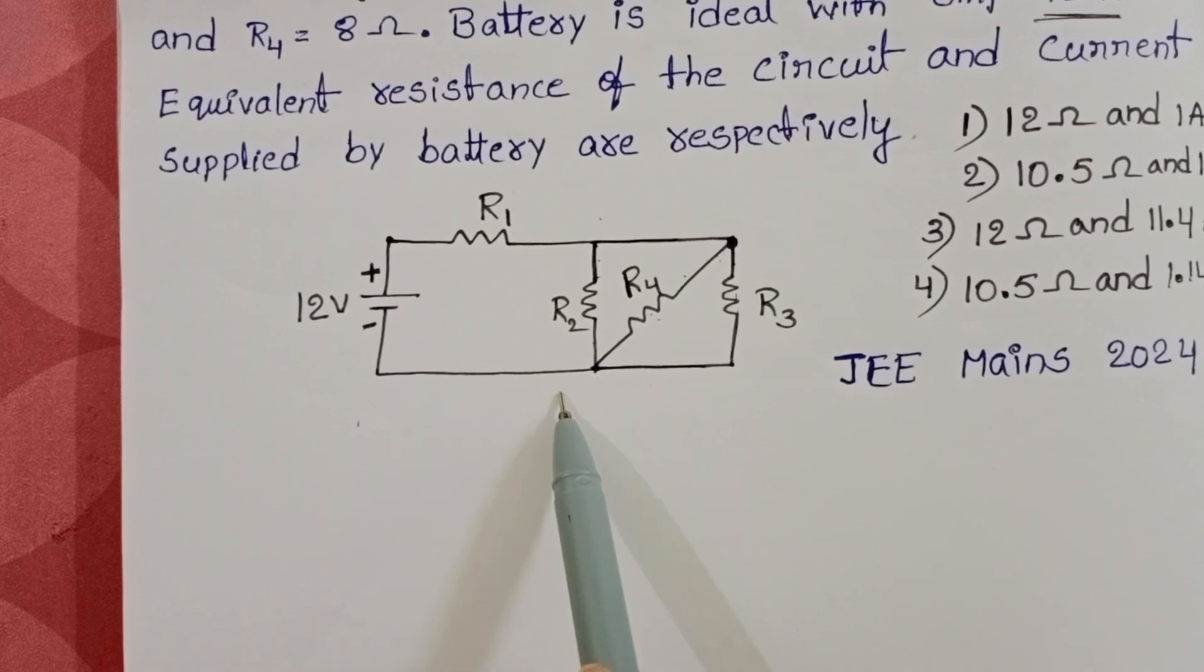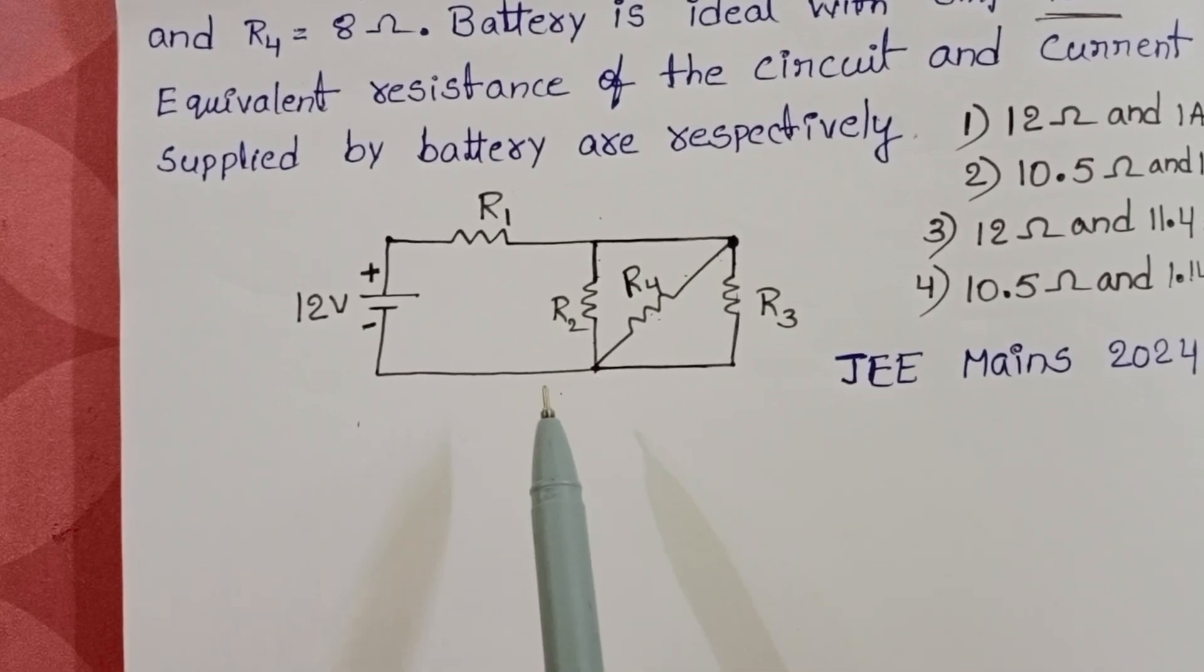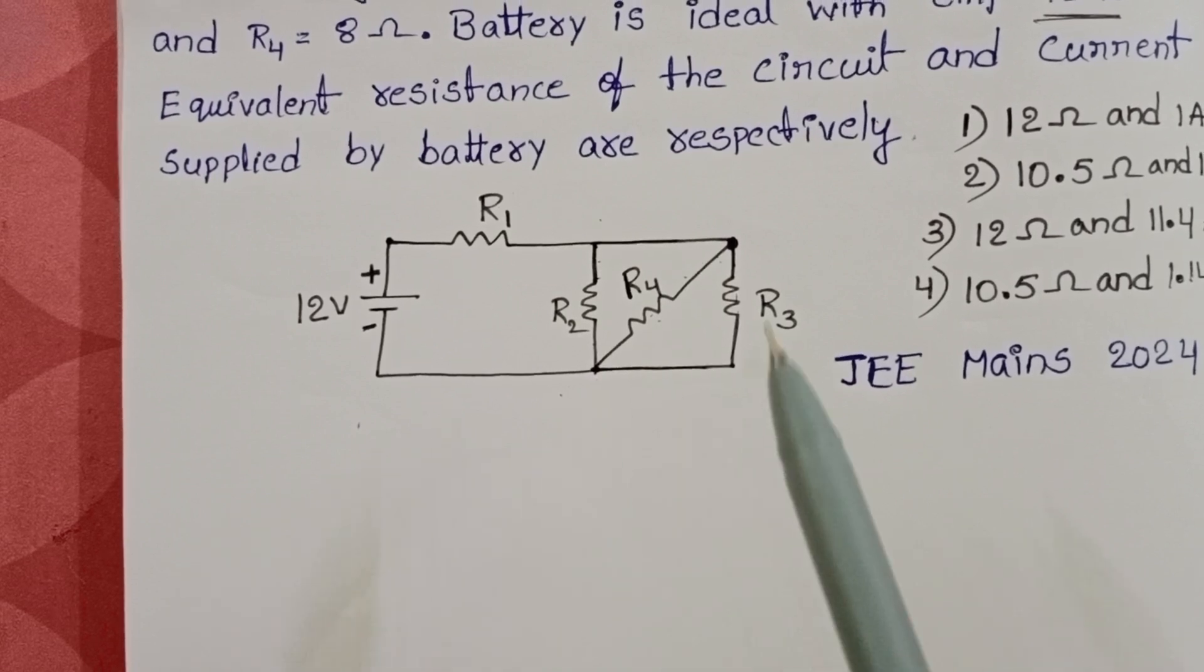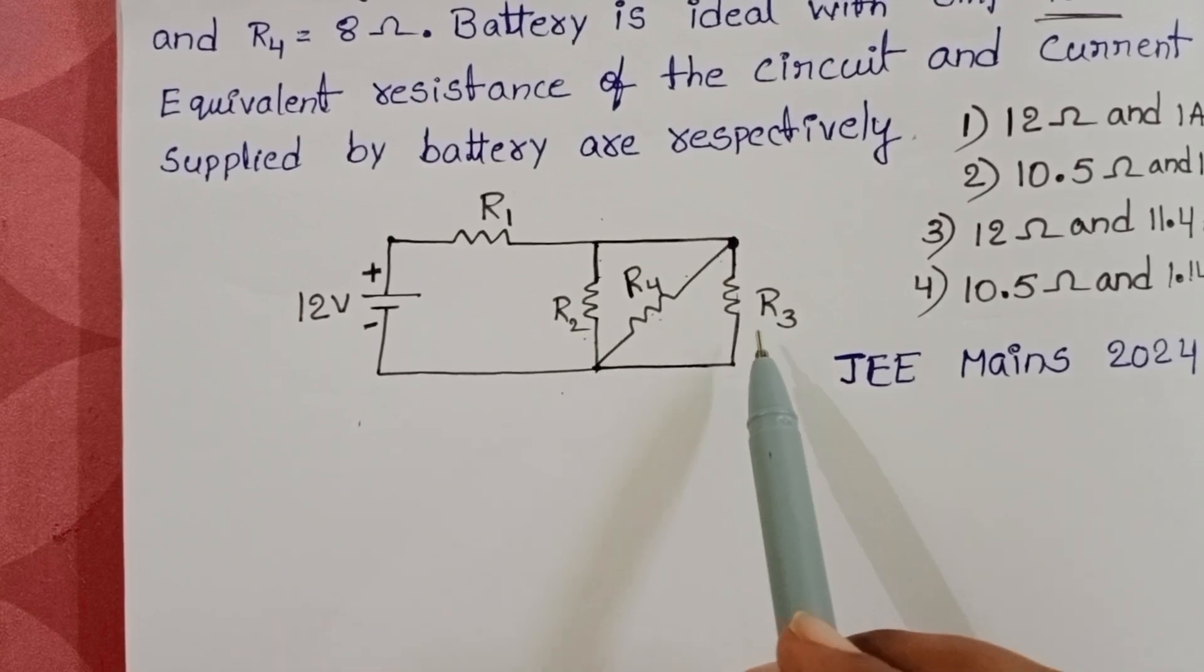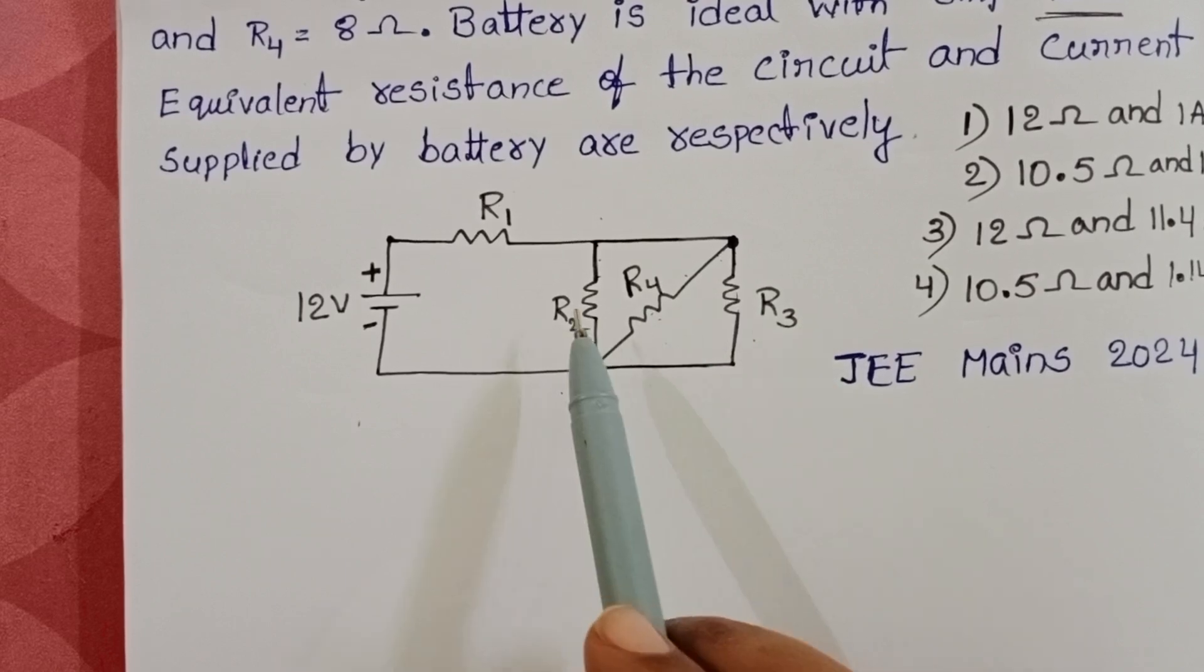First we have to find out the equivalent resistance of this circuit. Observe the circuit carefully. What about R2, R3, and R4? How are these three resistors connected in the circuit?